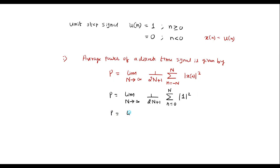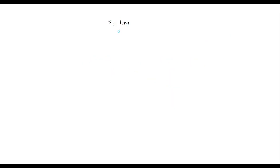Therefore, P is equal to limit n tends to infinity, 1 over 2n plus 1, times the summation from n equal to 0 to n of 1 squared, which is nothing but n plus 1. So P is equal to limit n tends to infinity of n plus 1 divided by 2n plus 1.